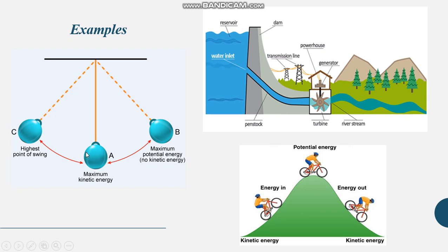When the pendulum moves from A to B, it has maximum kinetic energy. When it reaches point B, it slows down — at point B it has potential energy, because it is at a height from the ground level. Similarly, when it comes back from B to A, it again has kinetic energy. From A to C it is also kinetic energy, but at point C it has potential energy. So at positions B and C, the pendulum always has potential energy, and at position A it has maximum kinetic energy. Between A to B and A to C, both kinetic and potential energy are present.